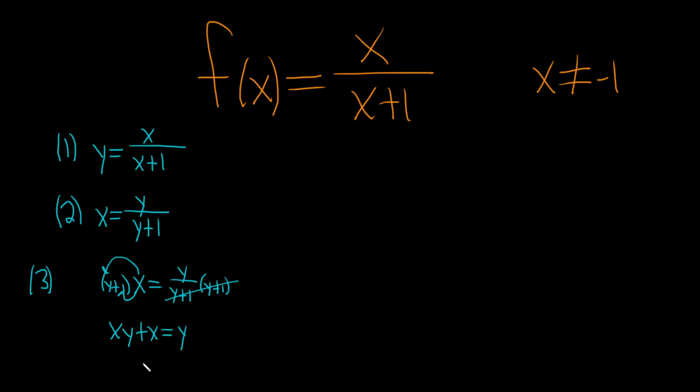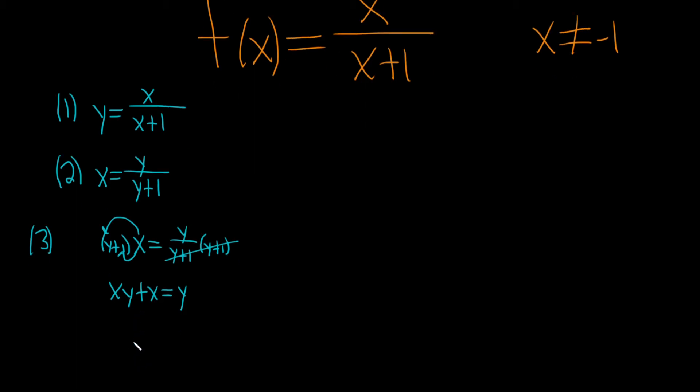Now we're looking for y. So the goal is to get all of the y's on one side so that we can actually factor out a y. So one way to do that would be to subtract the xy from both sides. That leaves us with x equals y minus xy.